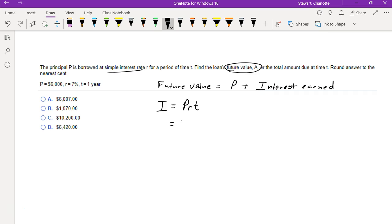In this case, the principal is 6,000. The interest rate written as a decimal is 0.07, and the time is one year.